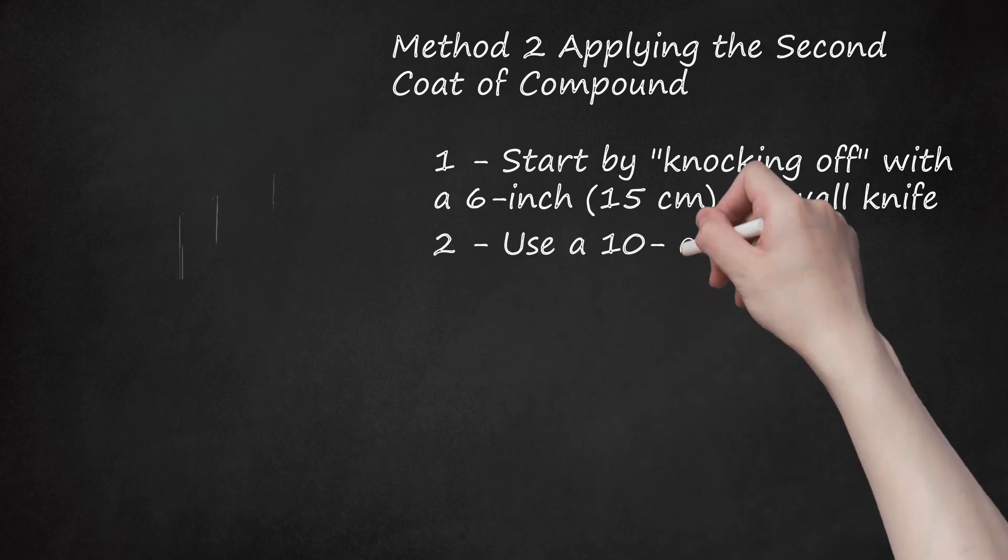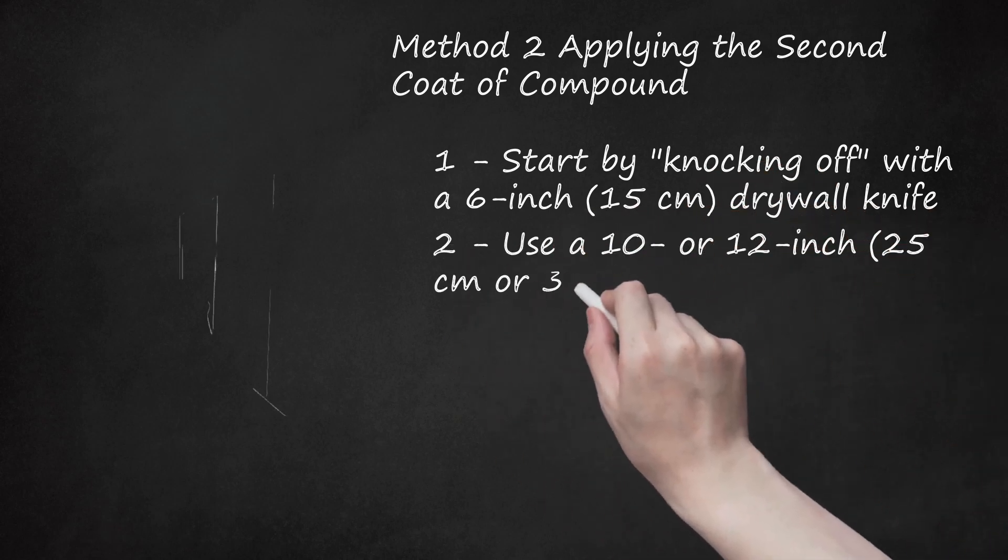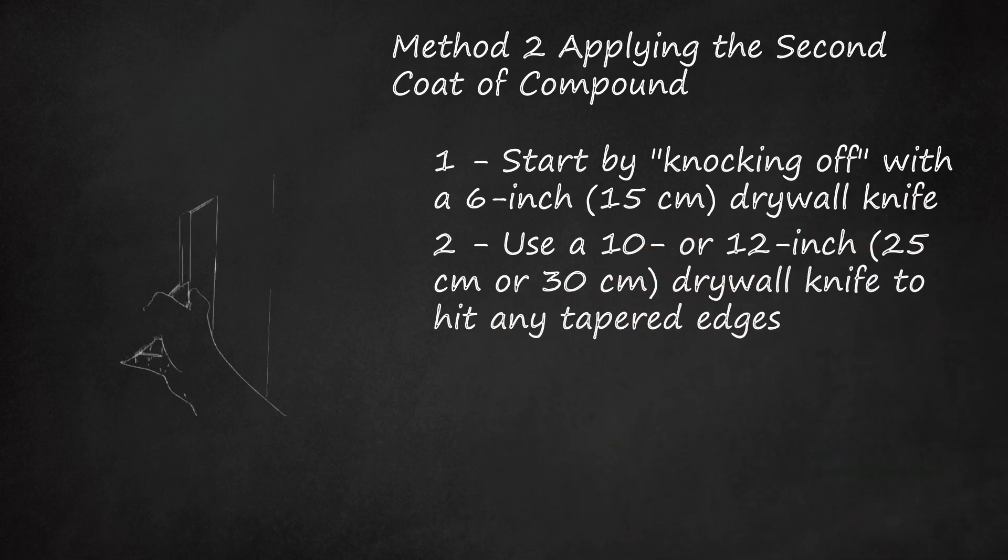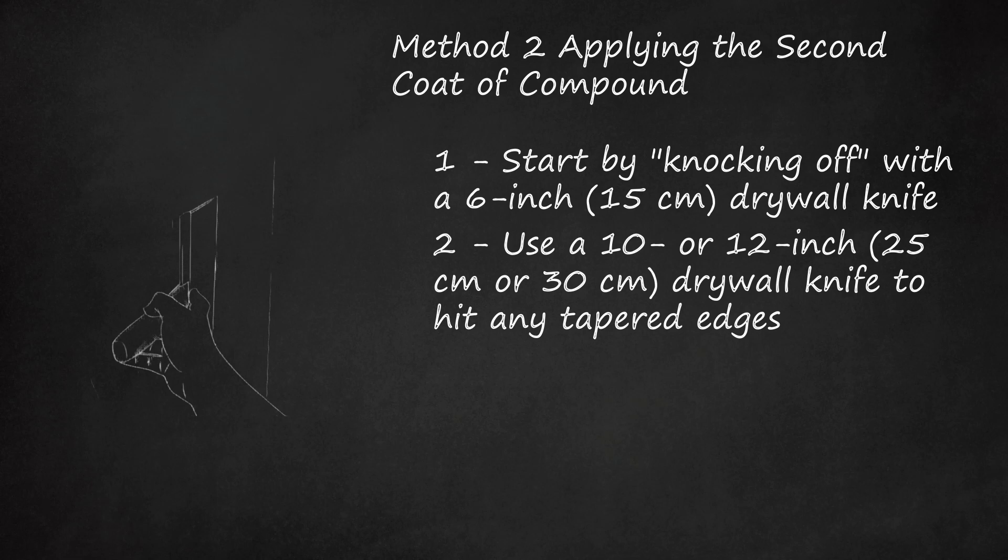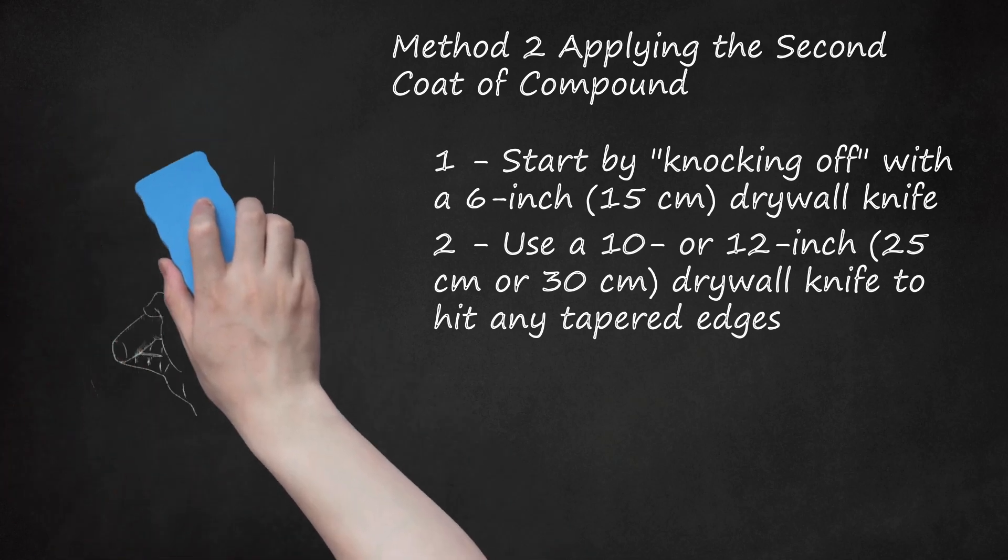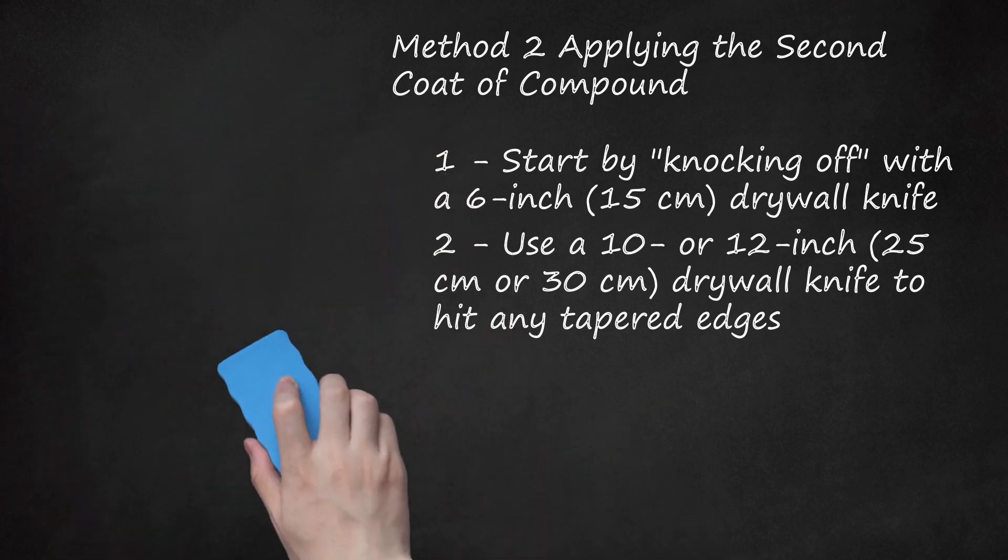Step 2: Use a 10- or 12-inch (25 centimeters or 30 centimeters) drywall knife to hit any tapered edges. Tapered edges are where two drywall edges meet, getting thinner as they meet. This creates a small void on the surface of the drywall. The good thing is that voids are easier to even out with compound than protrusions. Simply take a 10- or 12-inch drywall knife and run a thin piece of compound over the tapered joint in a straight line. Expect to finish tapered joints at around 10 to 12 inches.